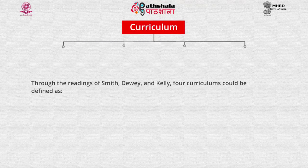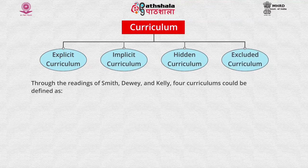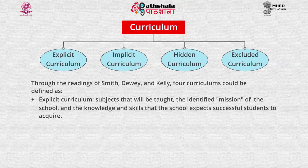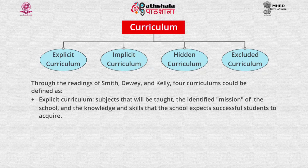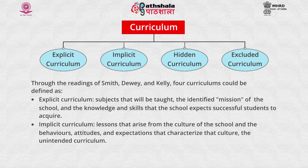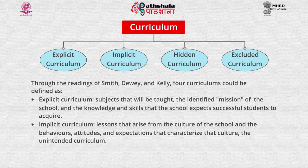Through the readings of Smith, John Dewey and Kelly, four curricula could be defined. First is explicit curriculum — subjects that will be taught, the identified mission of the school, and the knowledge and skills that the school expects successful students to acquire. Next is implicit curriculum — lessons that arise from the culture of the school and the behaviors, attitudes and expectations that characterize that culture; the unintended curriculum.